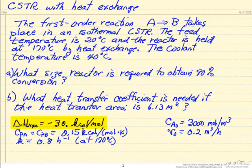So we're given heat of reaction. The heat capacities for A and B are the same, which means the heat of reaction does not change with temperature. The rate constant at 170 degrees C, the inlet volumetric flow rate, and the inlet concentration of 3,000 moles per cubic meter.